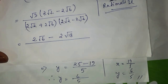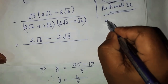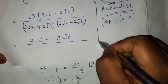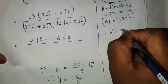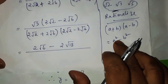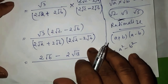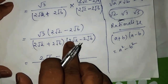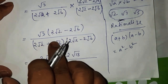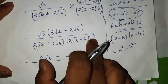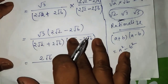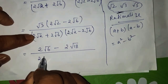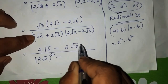So we can write a plus b and a minus b, so we can write a square minus b square. Using the (a+b)(a-b) formula, we get a² minus b². We have 2 root 2 whole square minus b square, and 2 root 4 root 6 whole square.